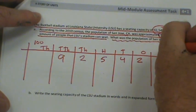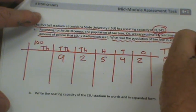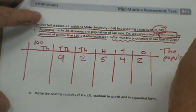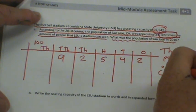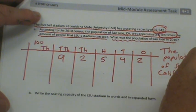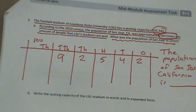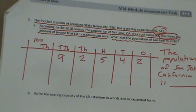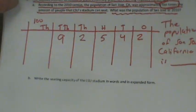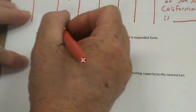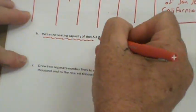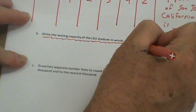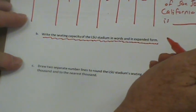Then you're going to say the population of San Jose, California is blank after you figure that out. And once again, you can always pause this if I'm going too fast.